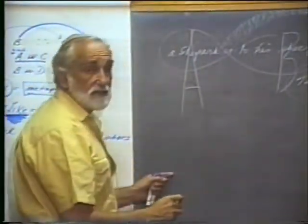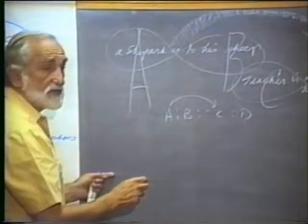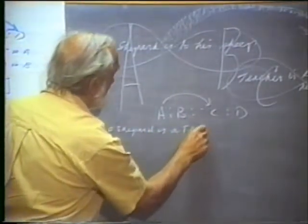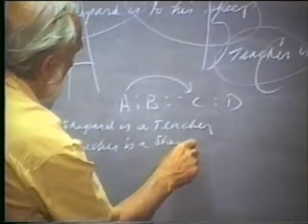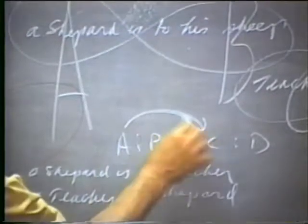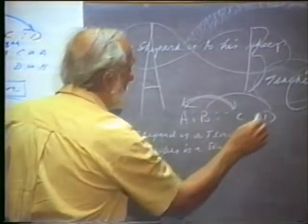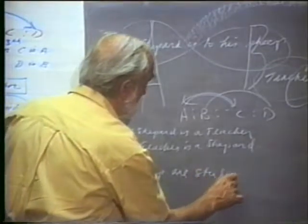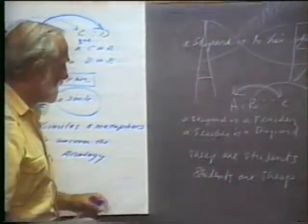I can take A is to C — a shepherd — and say a shepherd is a teacher. I can also say a teacher is a shepherd. So I can go in two directions. Would you equally agree I can say sheep are like students? Or: sheep are students. Students are sheep. So I have generated four sets — four metaphors, which we can turn into four similes by substituting 'is' with 'like': a shepherd is like a teacher, a teacher is like a shepherd, sheep are like students, students are like sheep.